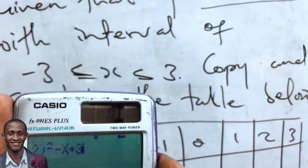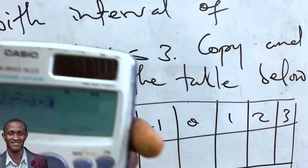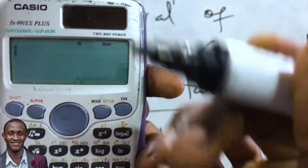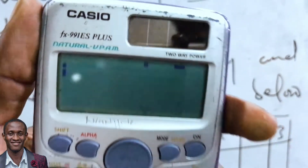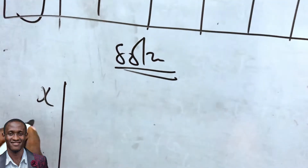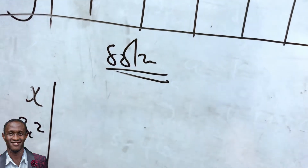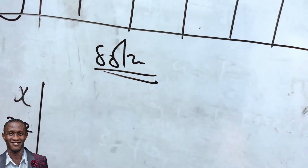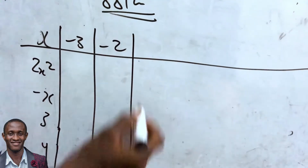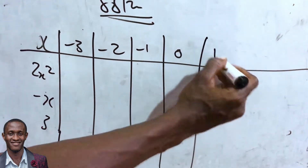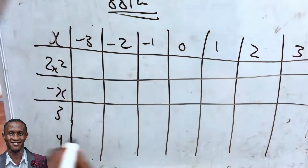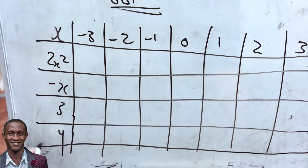So I type: 2 alpha X squared, then minus alpha X, then plus 3. That's the equation typed on the calculator. Now I'll re-sketch the table with separate columns: x, then 2x², then -x, then 3 as a constant, then y.